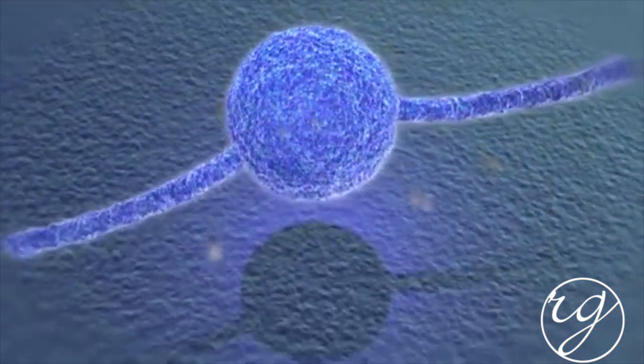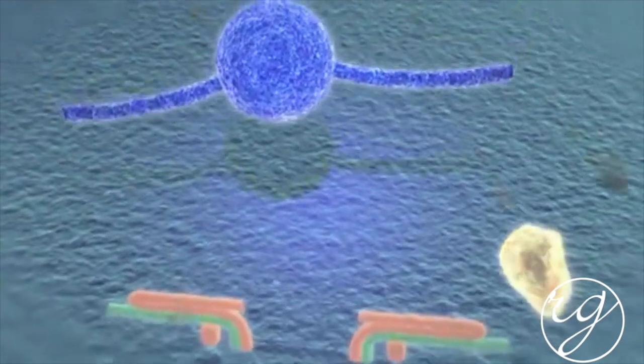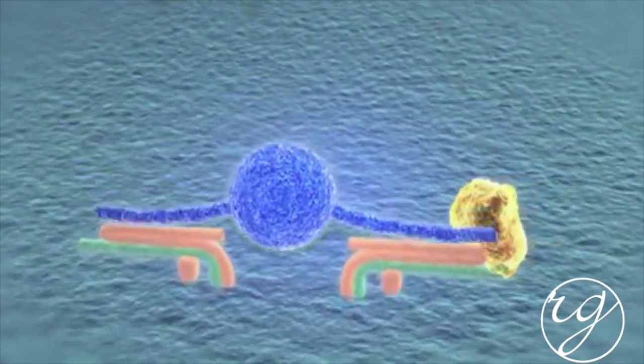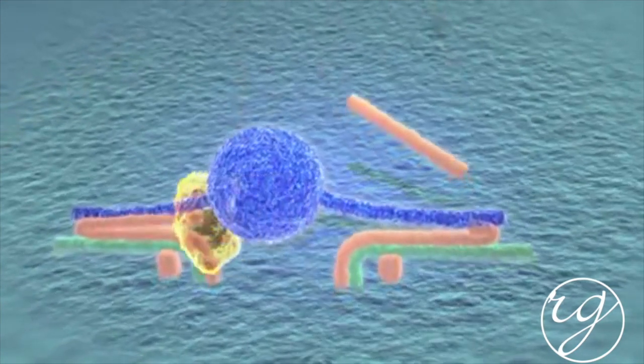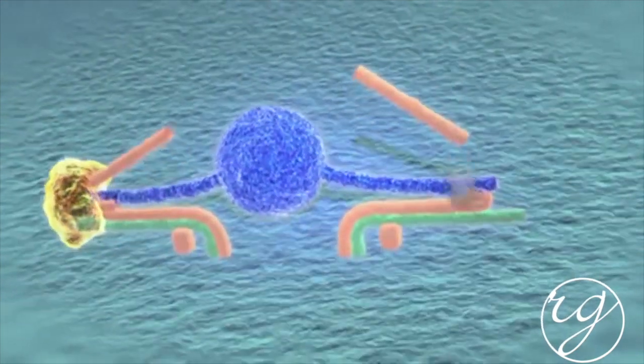In motor neurons, the light chain of the Botox core molecule blocks the release of acetylcholine by cleaving SNAP25, which is an essential component of the SNARE complex. When acetylcholine cannot be released, muscle contraction cannot occur.